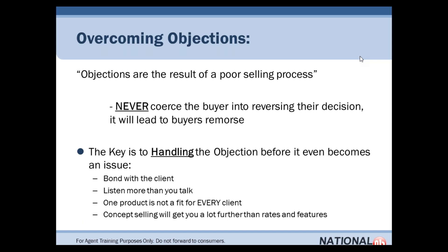Specifically when it comes to annuities, we have to focus on concept selling — it's going to get you a lot further than pitching products, rates, and company features. If you're doing a two-call close and you pitch rates, companies, and products, they're going to take that information and go research the company, find something negative, and find some reason why they don't want to do business with you. So we have to have a good sales process and handle the objection before it even becomes one.